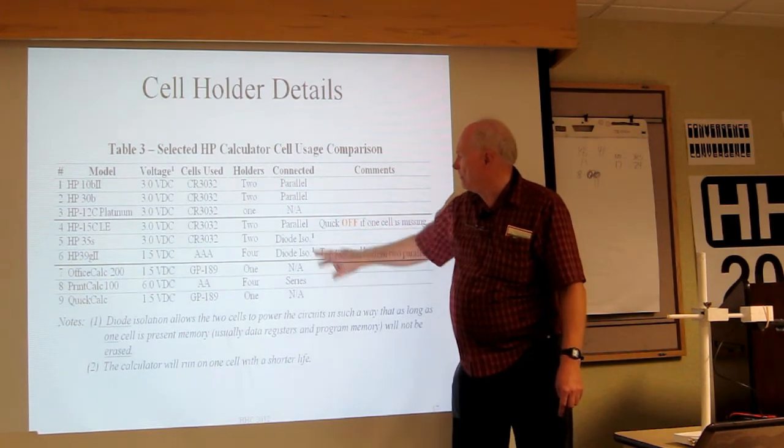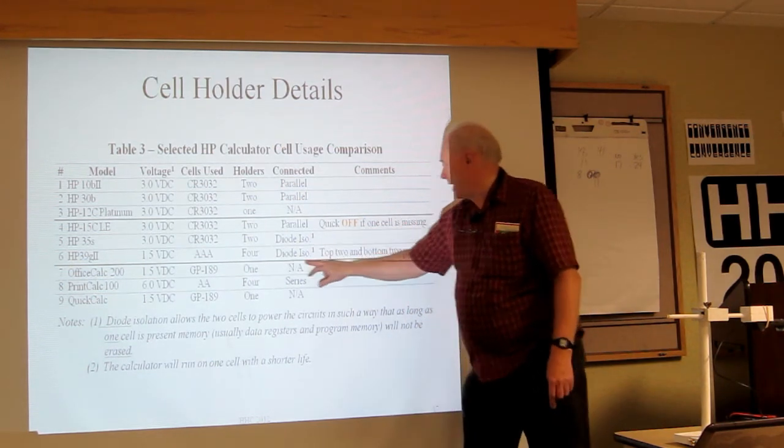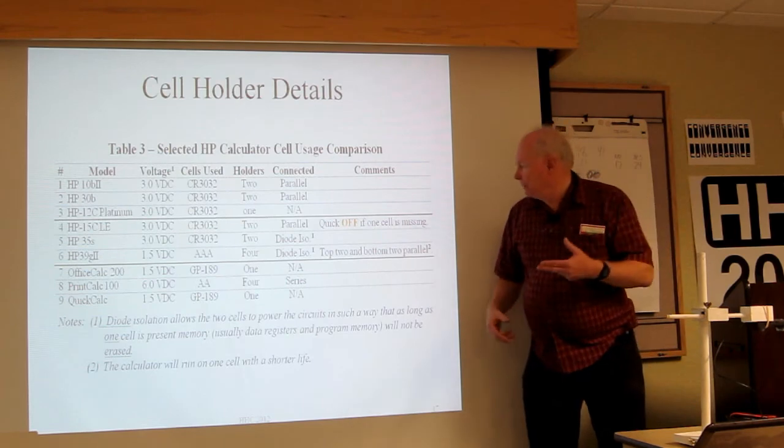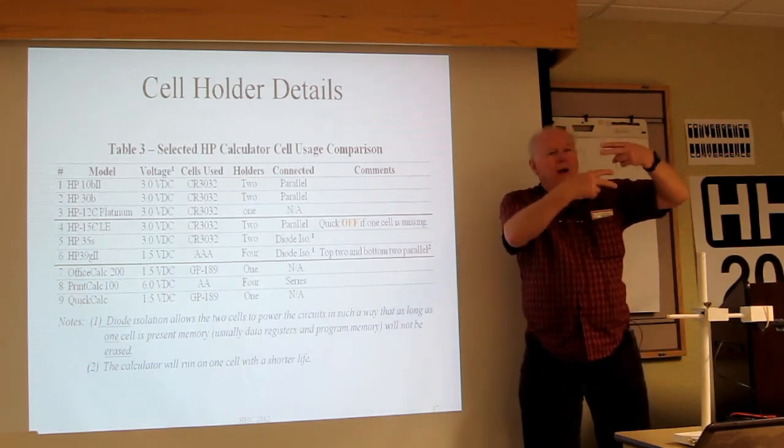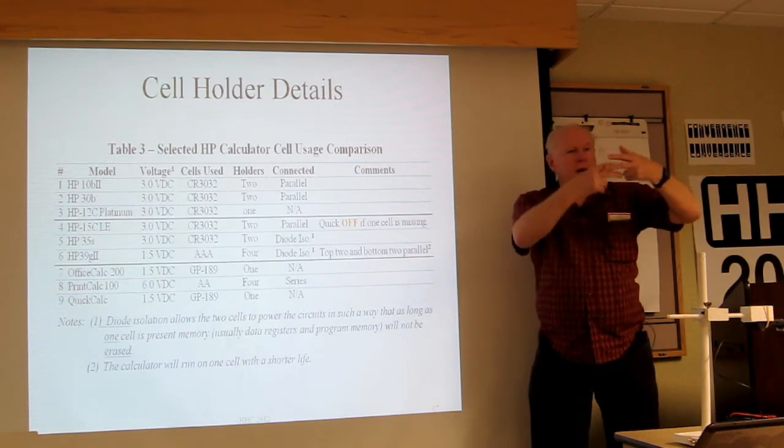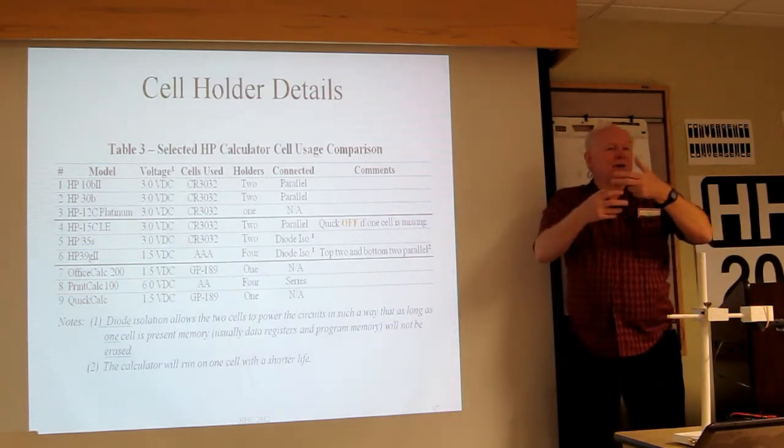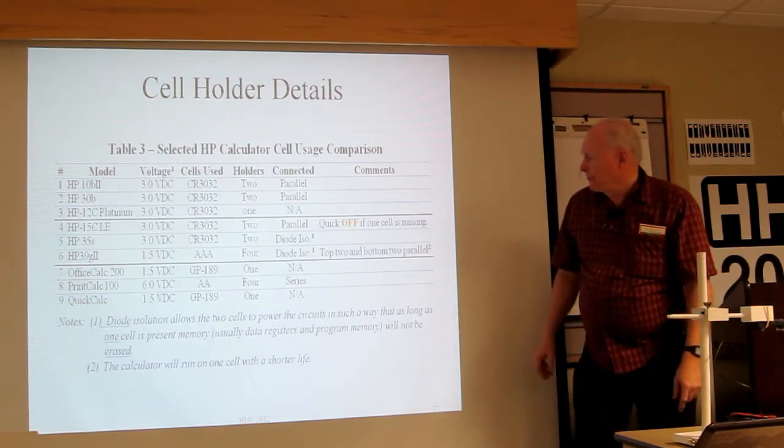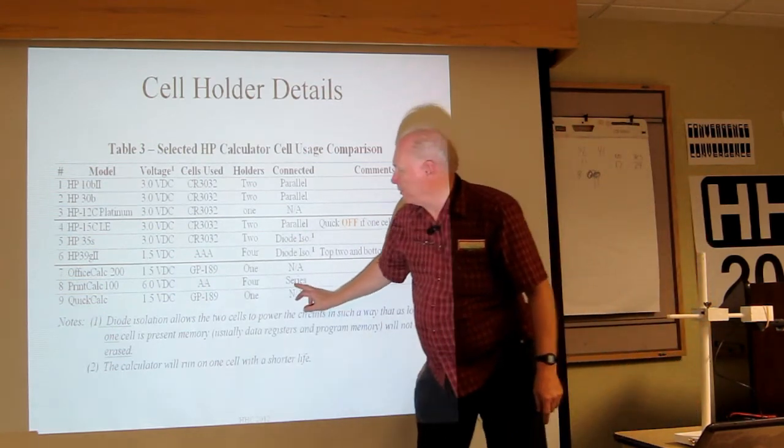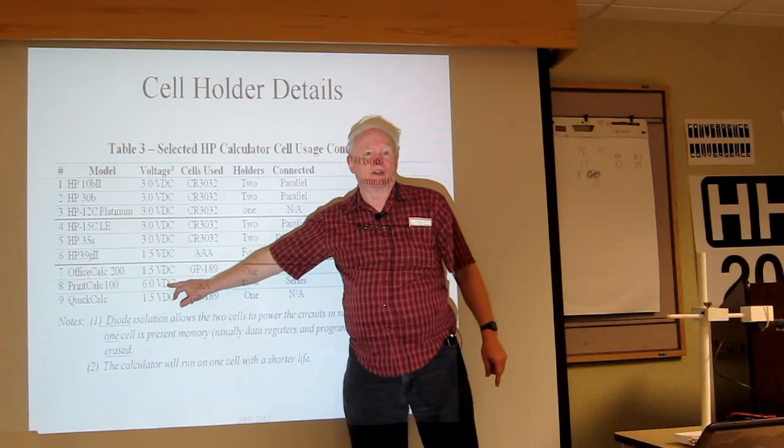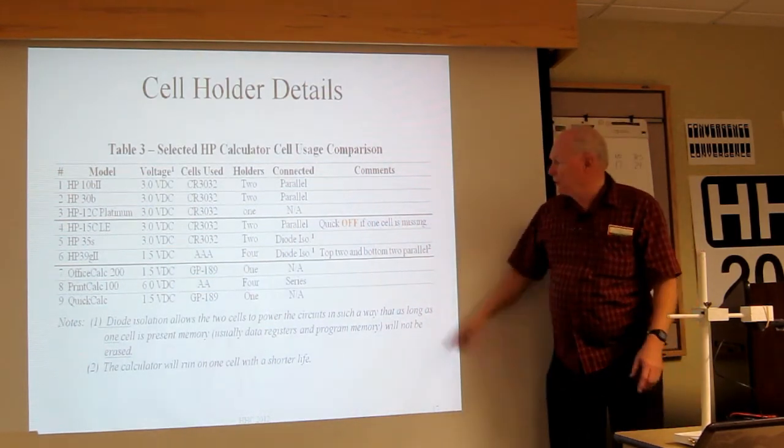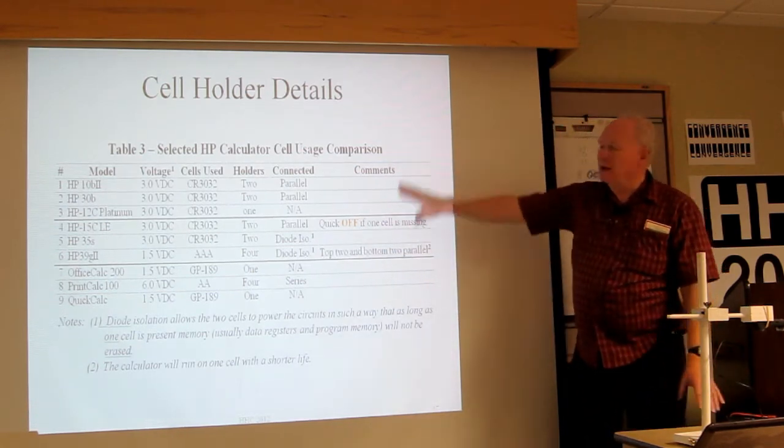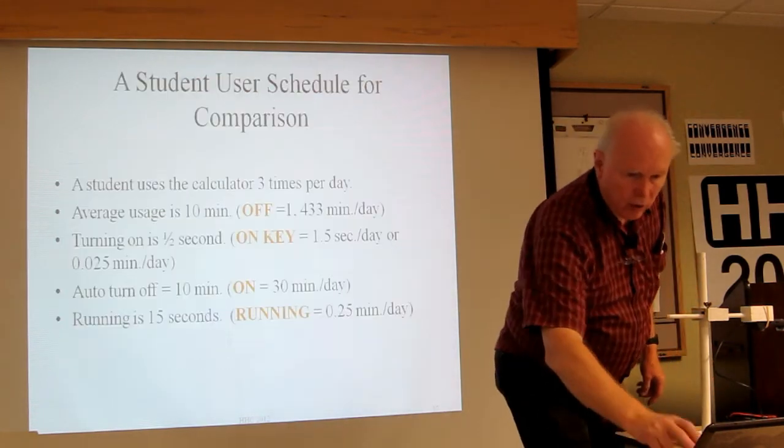There are cell holders, four cell holders used for the print calc. Those are the four double A cells. How are they connected? The cell holders are connected in parallel. In the case of 39G2, there are two sets, top and bottom pair, and the bottom pair they are in parallel. They're isolated between the two. I haven't done a lot of studies to figure out why it's designed that way. I think it has to do with the processor used. In this case, they're in series. The print calc actually runs on six volts DC. All four cells are in series and one single supply.